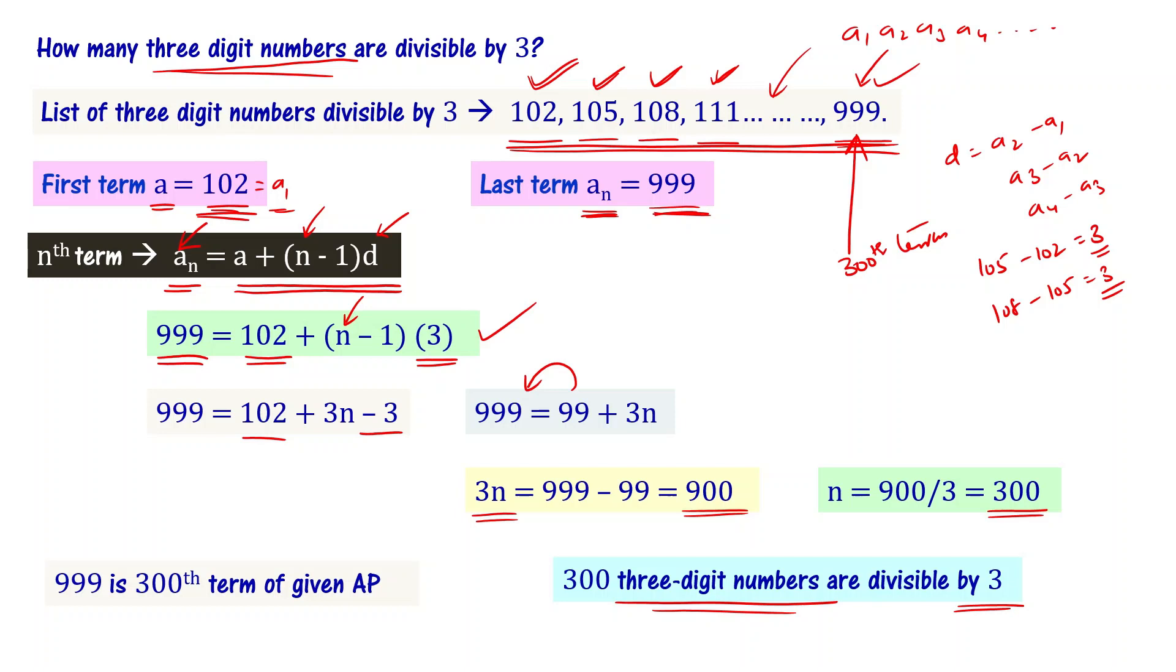In arithmetic progression, instead of using the brute force method of checking 103, 105 one by one, which takes a lot of time, we use this formula. So total 300 three-digit numbers are divisible by number 3. Understood?